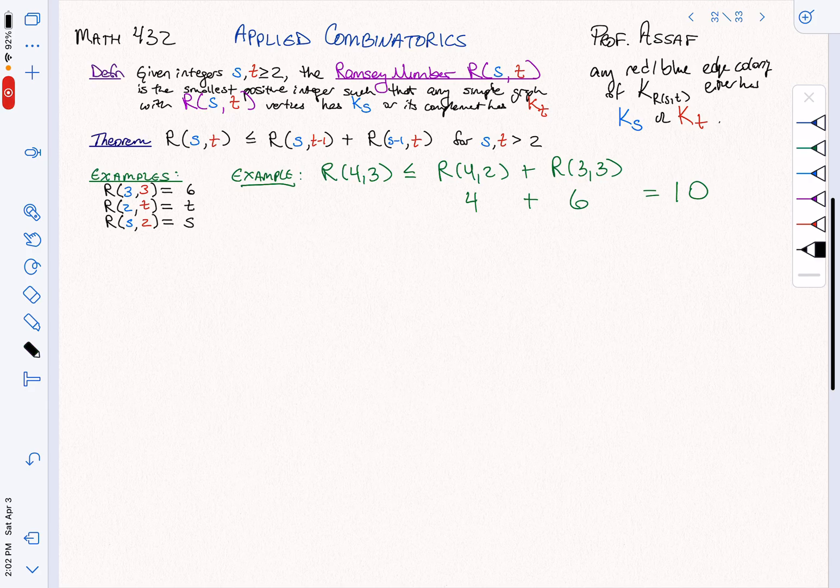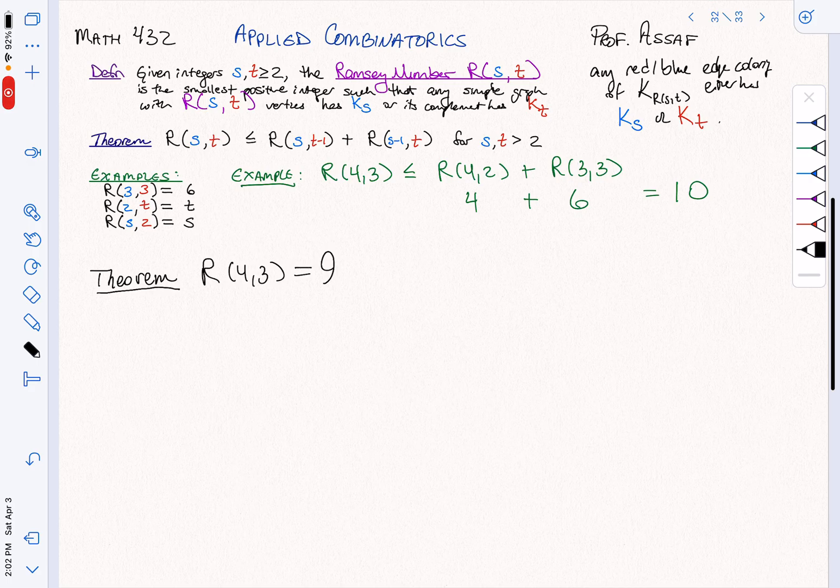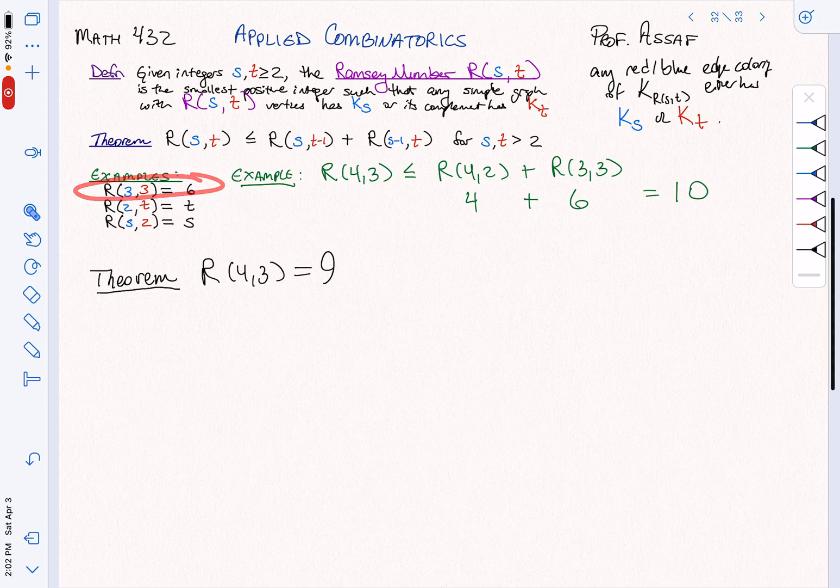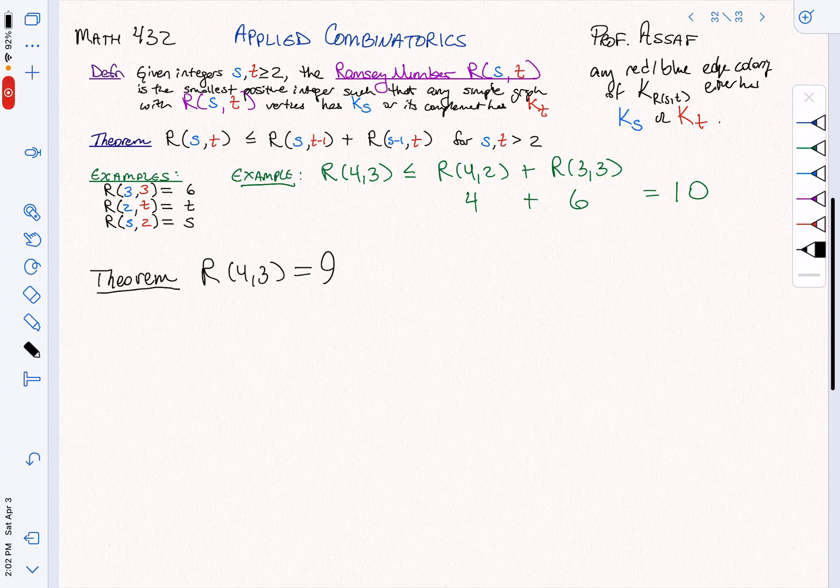But in fact, this is a great example of this bound not being what we call tight. It's not exact, not an equality. It turns out that R(4,3) is actually equal to 9. So how are we going to prove that? Our proof is going to go much the same way that we did this case of R(3,3) equals 6. Generally, these Ramsey theorem proofs go in very similar strategies.